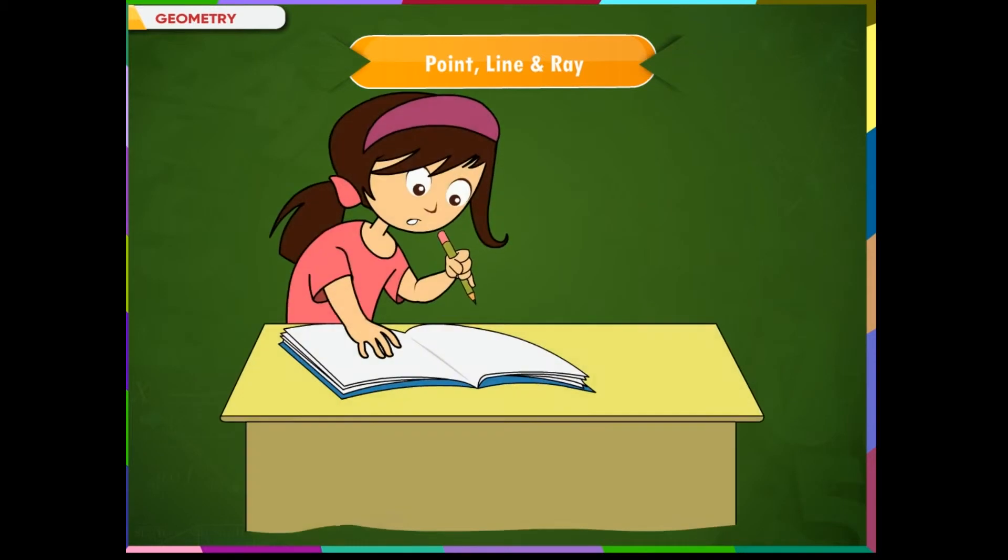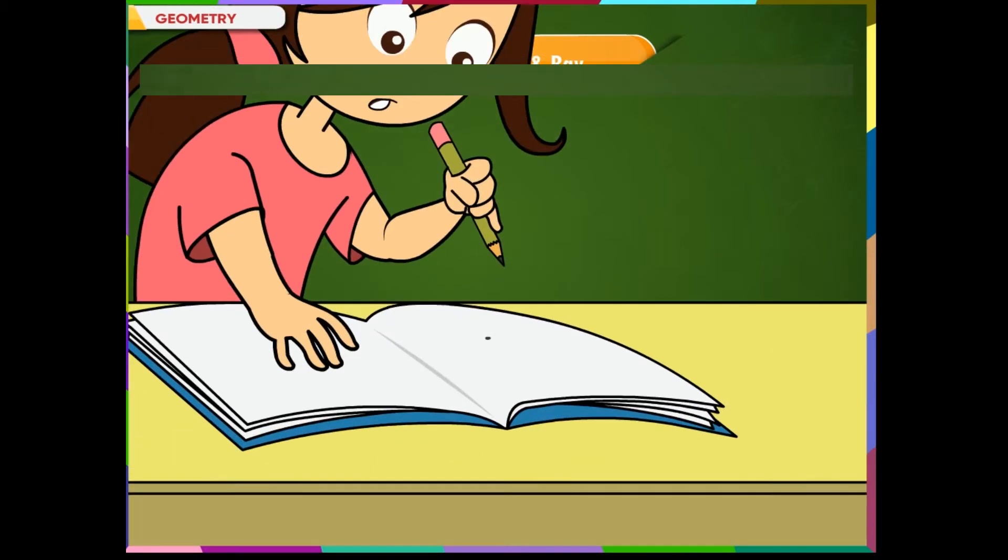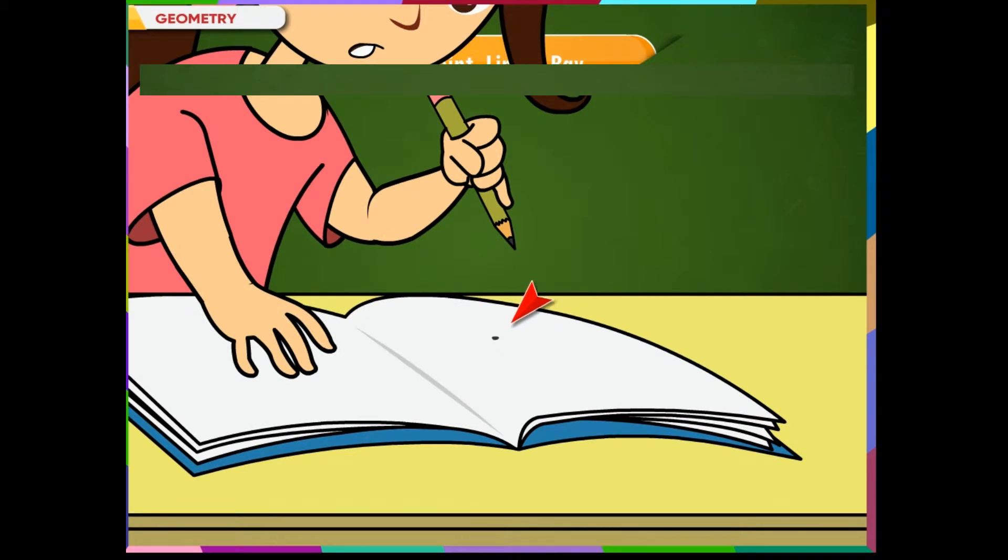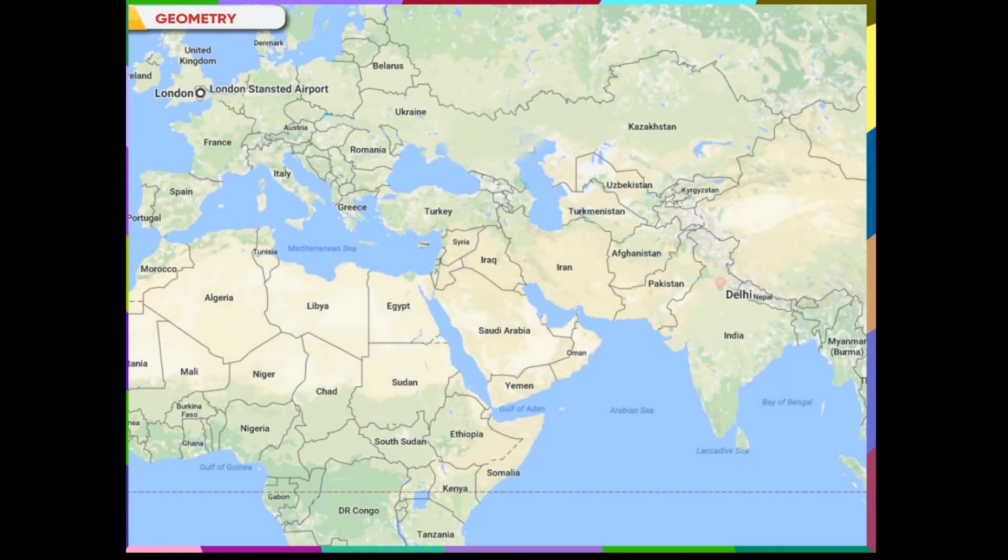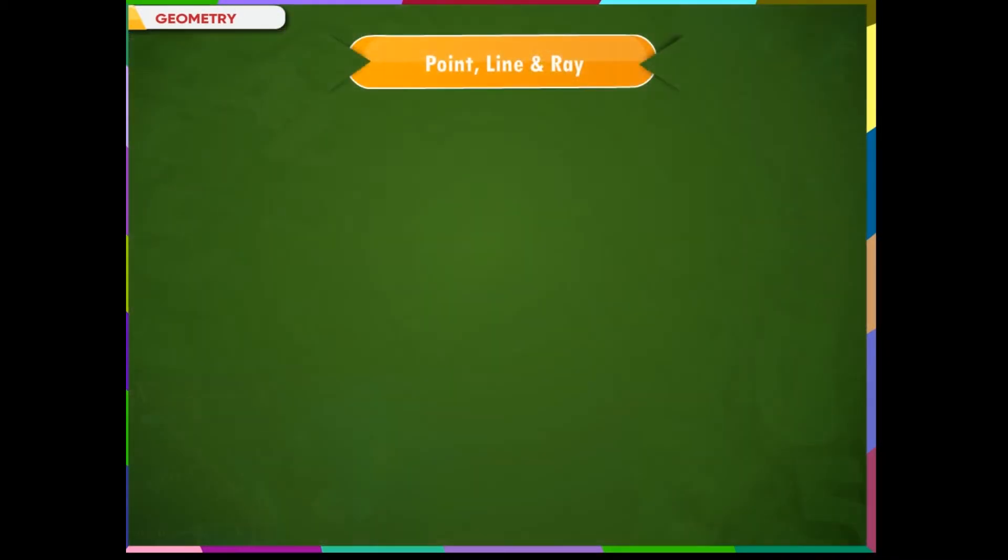Shalu wants to draw a line so she puts a dot on a paper with a pencil. This dot gives us the idea of a point. When we search for a place in a map we see a red location marker that points a place in Google Maps as shown here. These points refer to the exact location of the places. Here it is showing London and New Delhi.